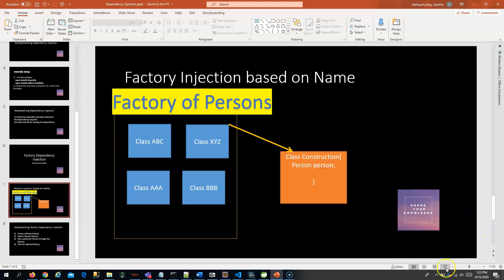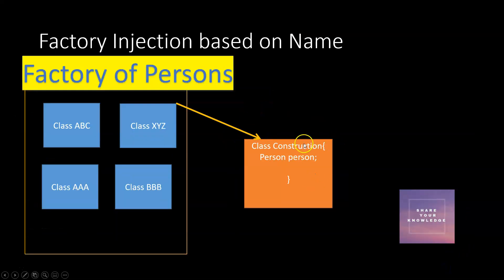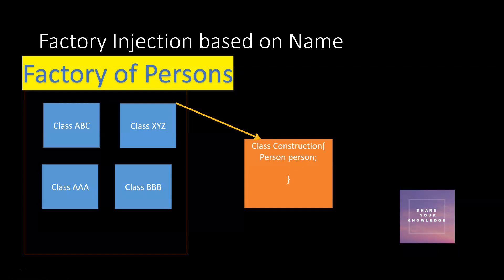In the previous video we were injecting a person object inside the construction class. Now we are going to inject a person factory inside the construction class, and based on the name given to the factory, I want to inject that particular class instance inside the construction class.